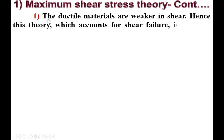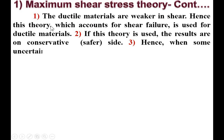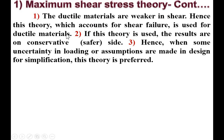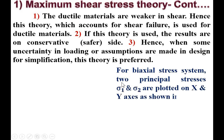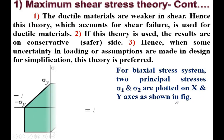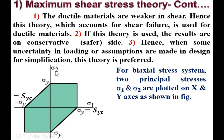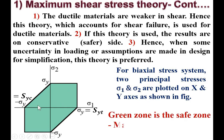Regarding selection criteria: ductile materials are always weaker in shear, so this theory, which accounts for shear failure, is used for ductile materials. Results are on the conservative (safer) side, so when there is uncertainty in loading or simplifying assumptions are made in design, this theory is preferred. For a biaxial stress system, sigma_1 and sigma_2 are plotted on the x and y axes respectively, and the green zone represents the safe zone according to maximum shear stress theory.